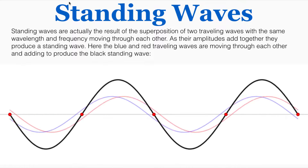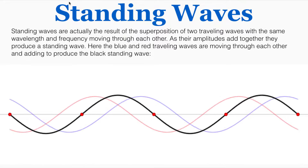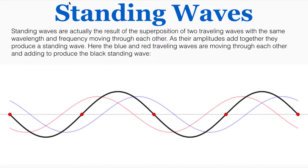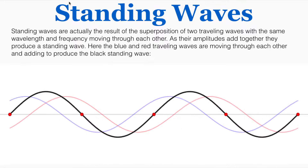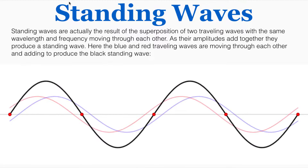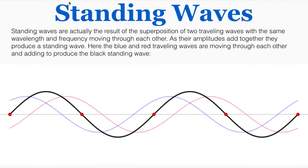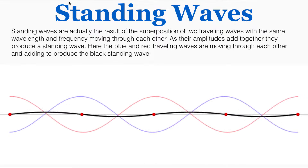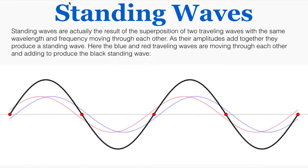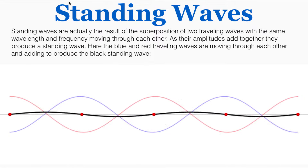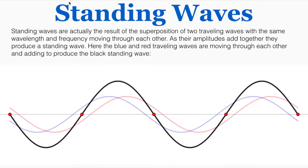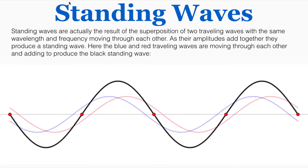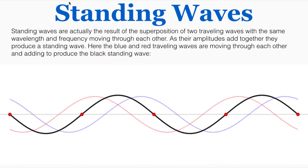Here the blue and red traveling waves are moving through each other and adding to produce the black standing wave oscillating up and down. This pattern is essential to understanding everything else in this series on standing waves. You have to understand that a standing wave is really just the superposition of two traveling waves moving through each other — it's just the sum of the amplitudes of the two waves following the rules of superposition.